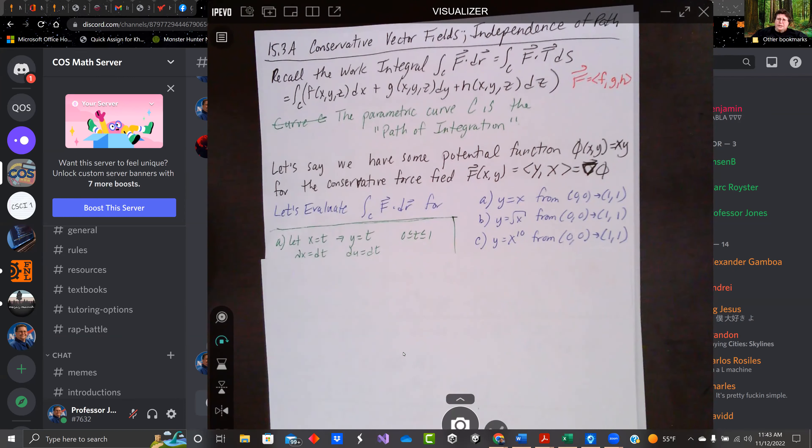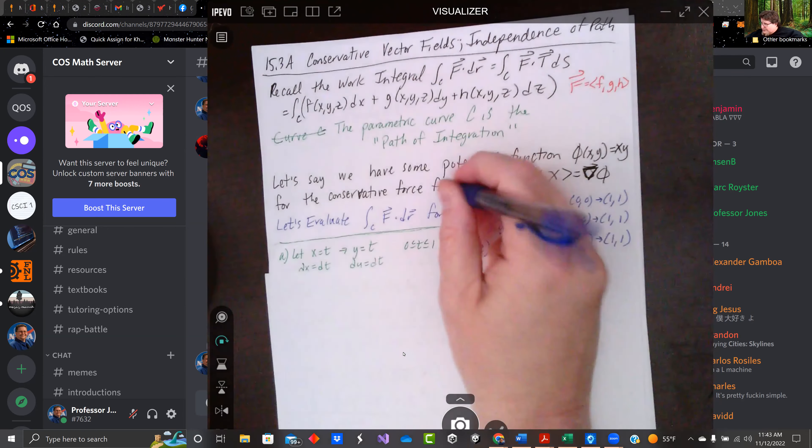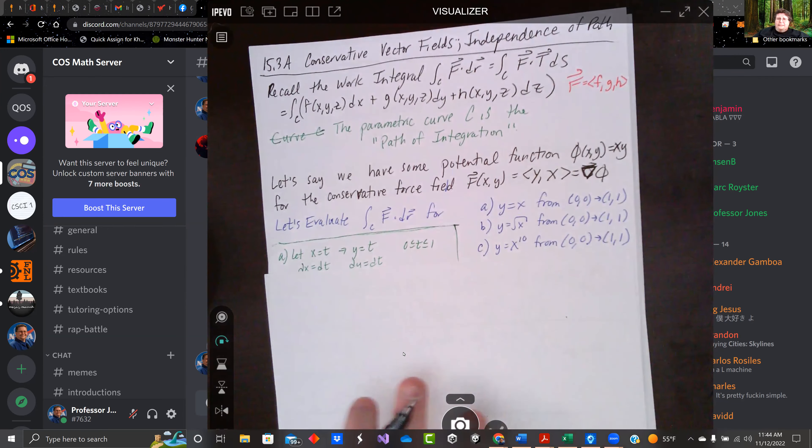And let's say we have some potential function phi. In this case, I'm going to use xy as our potential function so that our conservative force field F is the gradient of that. And it's y and then x.